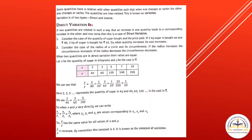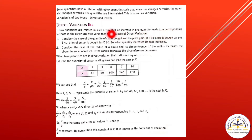First of all we will see what is direct variation. If two quantities are related in such a way that an increase in one quantity leads to a corresponding increase in the other, and vice versa, then this is a case of direct variation.